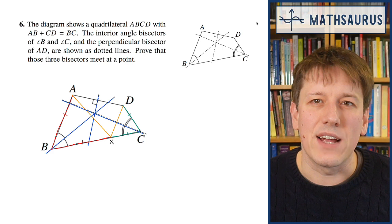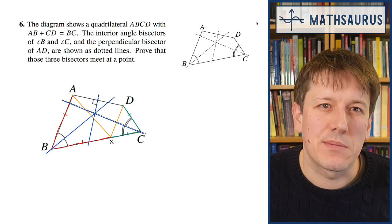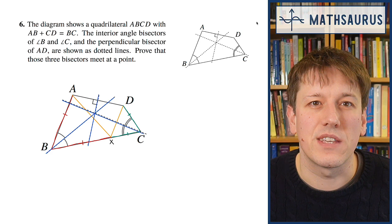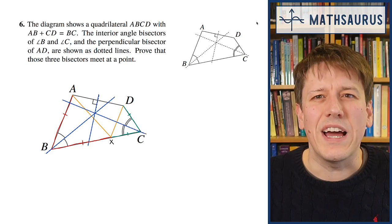If we've got a line that is the angle bisector of B, it's going to split that triangle ABX into two congruent triangles, and the same over at C. So how do we use this information?